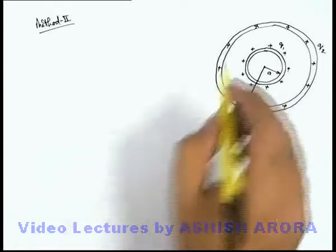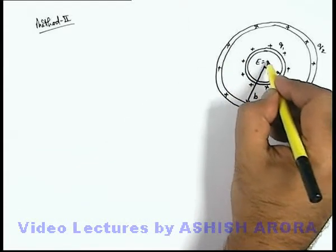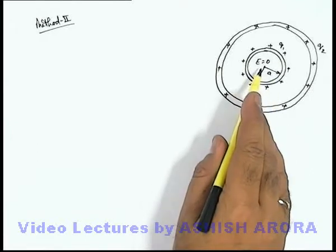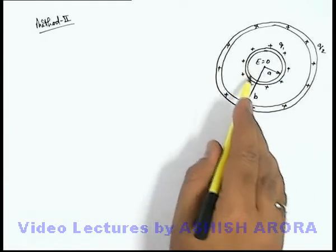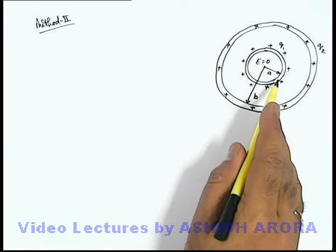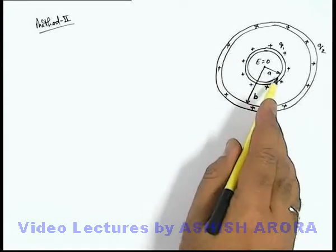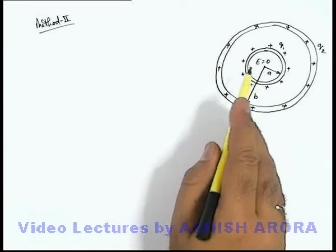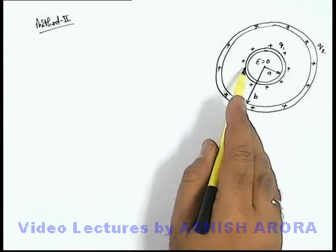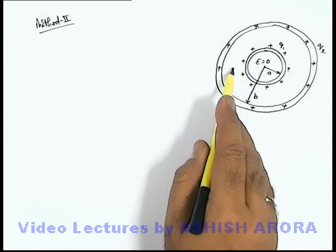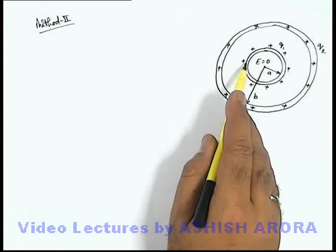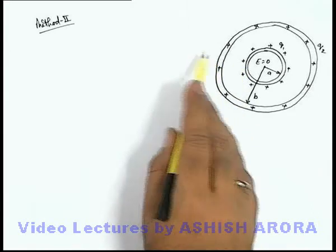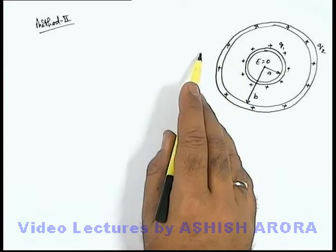We can directly state that the electric field inside the inner shell is equal to zero, so there won't exist any field energy in the region inside the inner conducting shell. In the region between the 2 shells, there exists electric field only due to the charge q1. In the outermost region, electric field exists due to both of these shells.